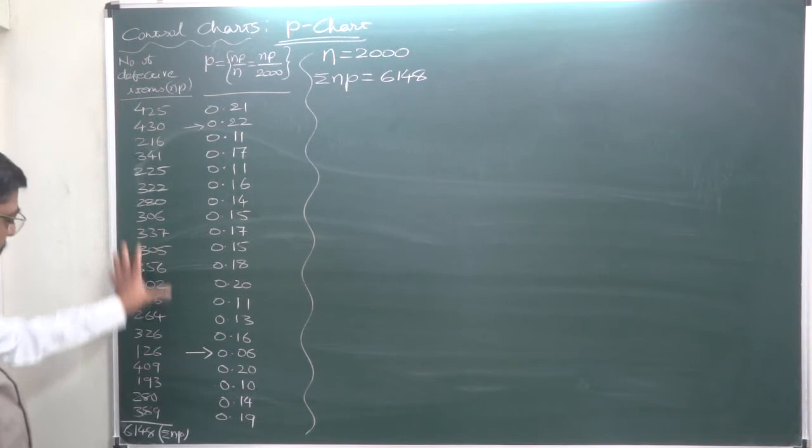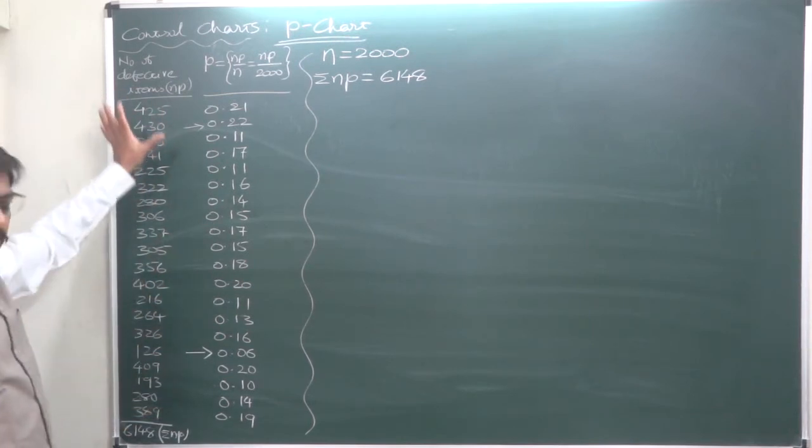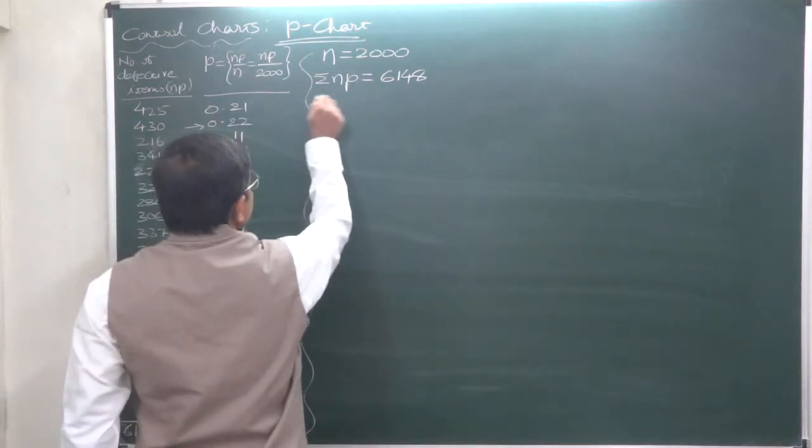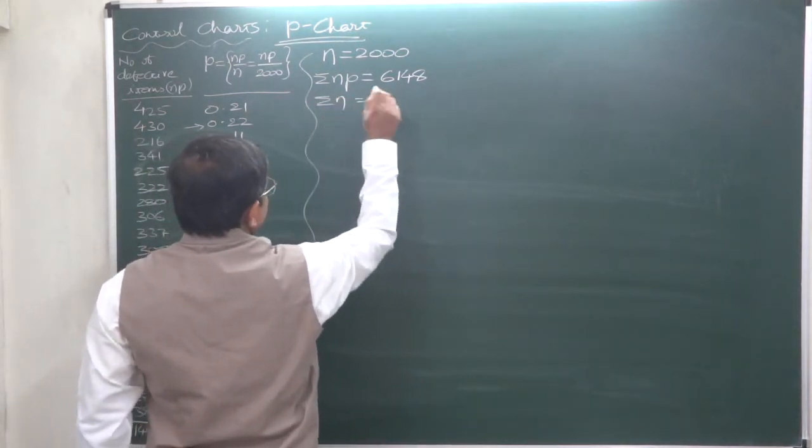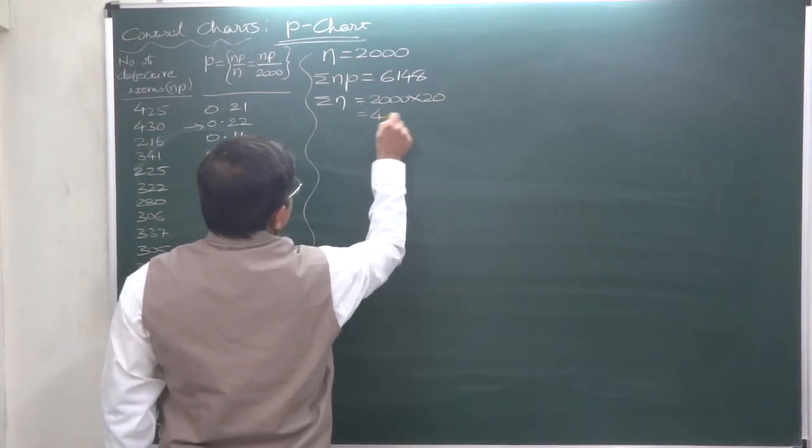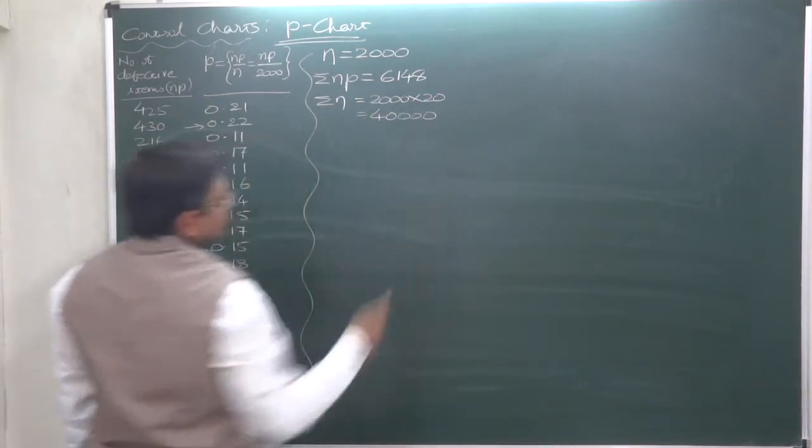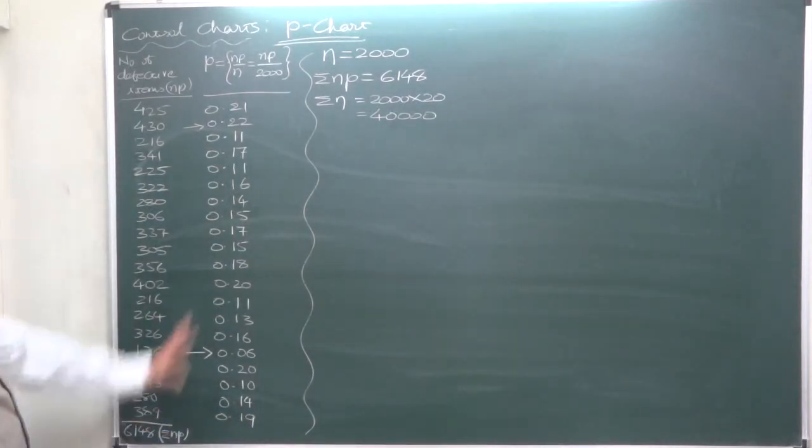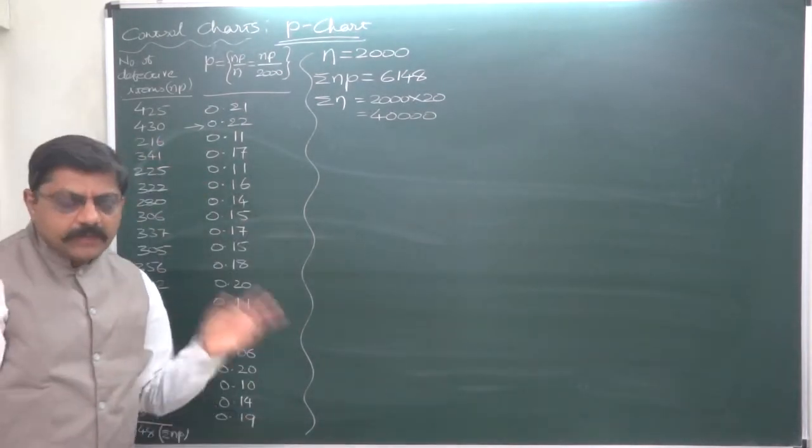Now, 20 samples each of 2000 items. That means we can have the overall sample size. 2000 and 20 samples, that will be 40,000. This will give us the shortcut to calculate the P bar later on.